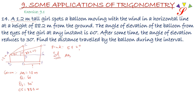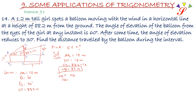When the height of the girl AB is 1.2 meter, it means DE is also 1.2 meter. So the remaining height CD will be 88.2 minus 1.2, which is equal to 87 meter. Therefore HG is also 87 meter, since CD equals HG. So HG = 87 meter.